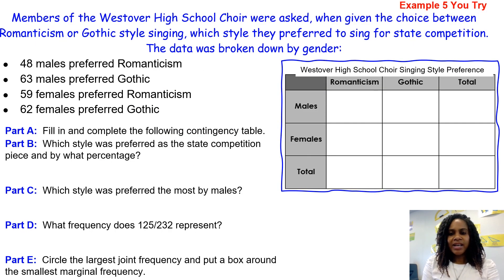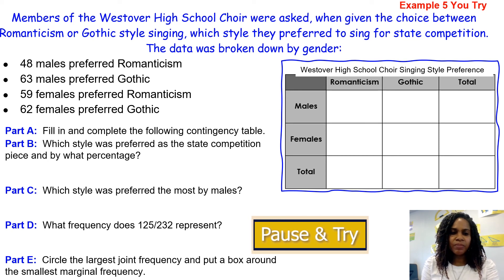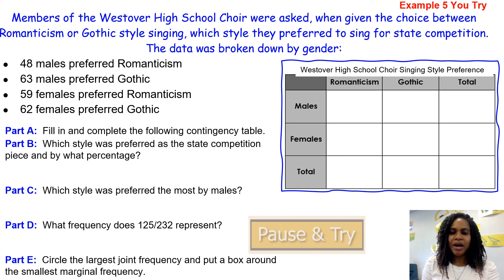The last problem is one I'd like you to try on your own. Members of the Westover High School choir were asked when given the choice between romanticism or gothic style singing, which style they prefer for state competition. The data was broken down by gender. Fill out the frequency table for part A and then answer the four following questions. Go ahead and pause the video and try this problem on your own.